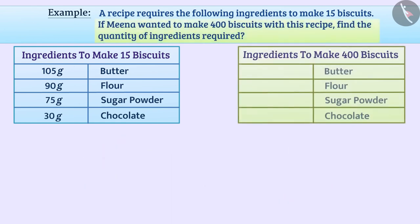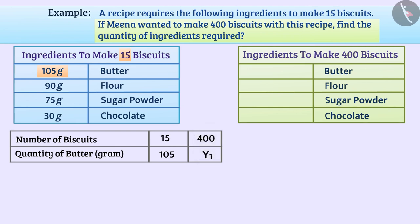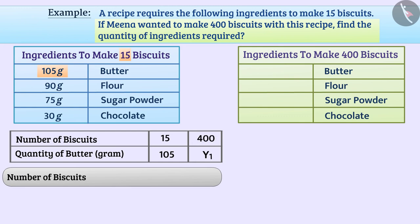Let's find the ingredients required to make 400 biscuits. We can show the relationship between the number of biscuits and the quantity in grams of butter like this. Suppose the required quantity of butter to make 400 biscuits is y1. Since the number of biscuits and the required quantity of butter is directly proportional, 15 divided by 105 is equal to 400 divided by y1.